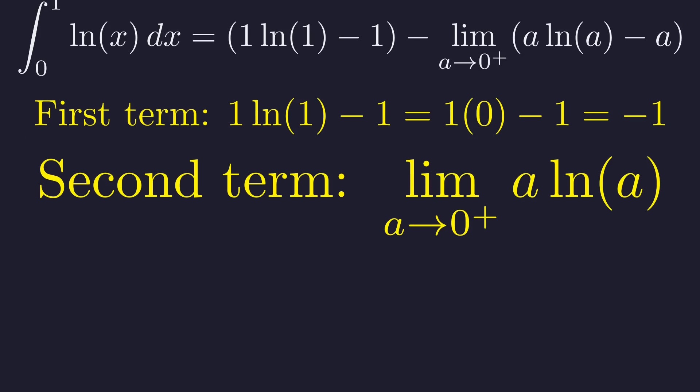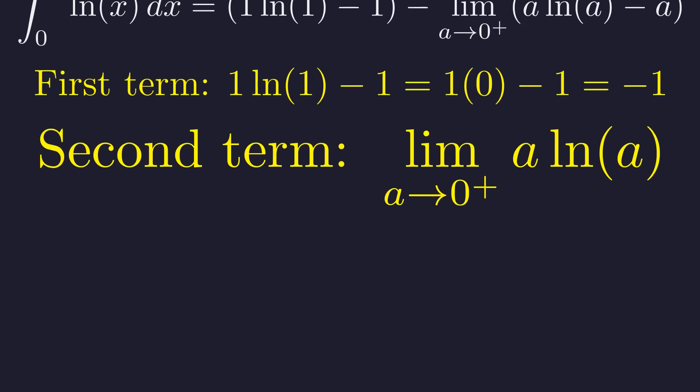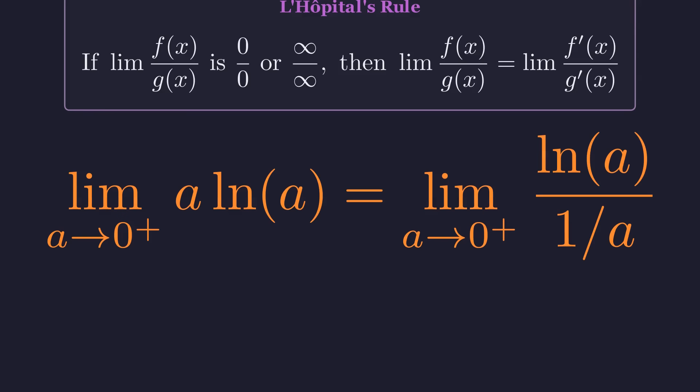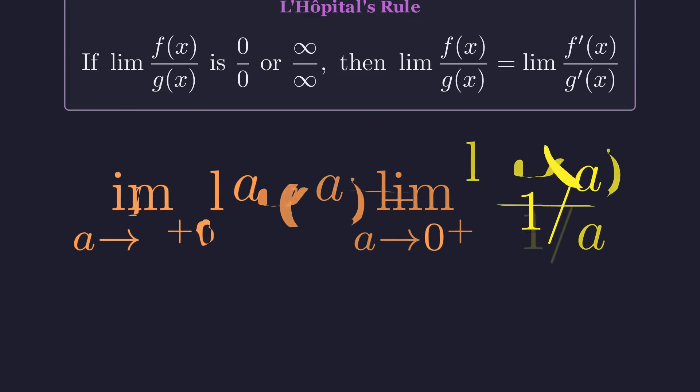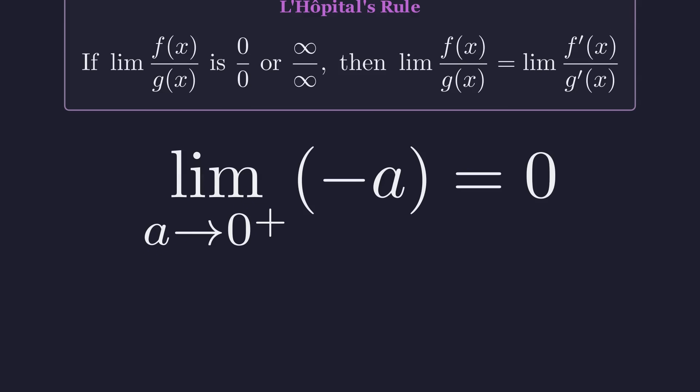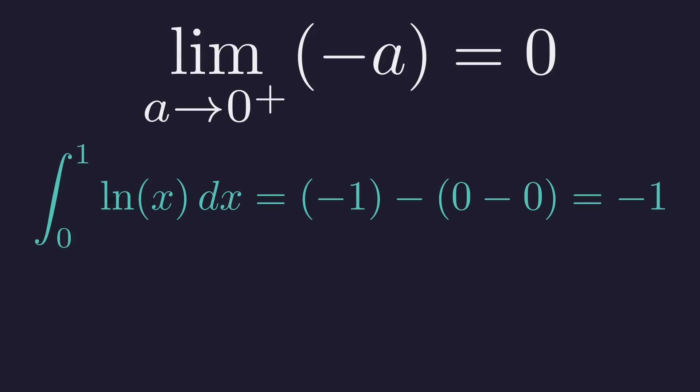The tricky part is the limit of a times the natural log of a. This is an indeterminate form of 0 times negative infinity. To solve this, we use L'Hopital's rule, which allows us to take the derivatives of the numerator and denominator when we have an indeterminate fractional form. First, we rewrite the product as a quotient, which now has the indeterminate form of negative infinity over infinity. Now we apply L'Hopital's rule by differentiating the numerator and the denominator. The derivative of the natural log of a is 1 over a, and the derivative of 1 over a is negative 1 over a squared. This fraction simplifies to negative a, and as a approaches 0, the limit is 0. So, the entire integral evaluates to negative 1.